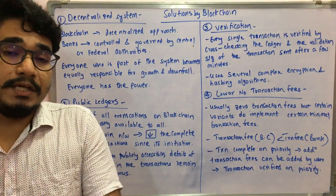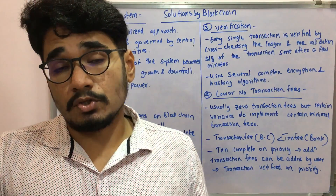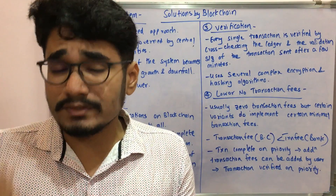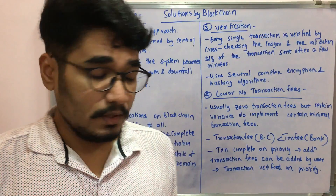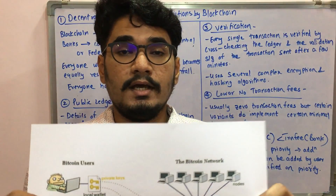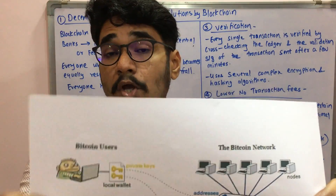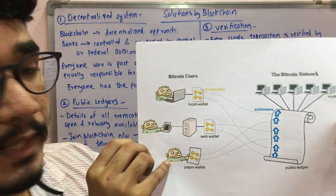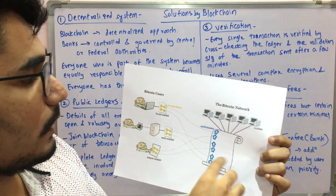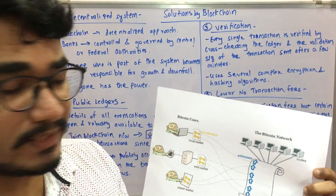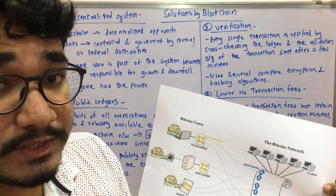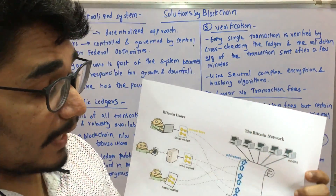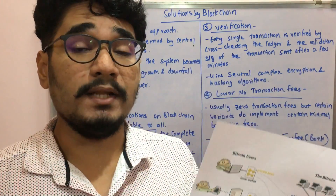Next is the public ledger. You can understand it like a bank statement — you go to a bank and ask for a list of all your transactions from the last month or six months. In blockchain, you have Bitcoin users connected to local wallets, web wallets, and paper wallets across the Bitcoin network, and it calculates all transaction values and creates a list for any given period.